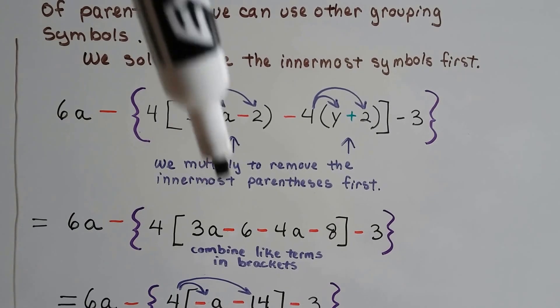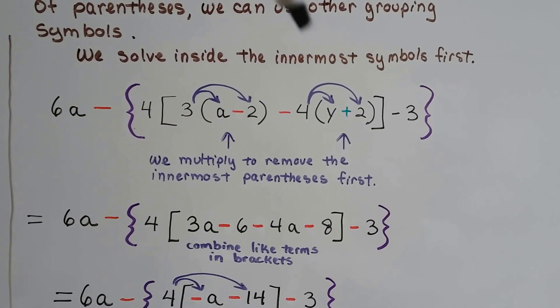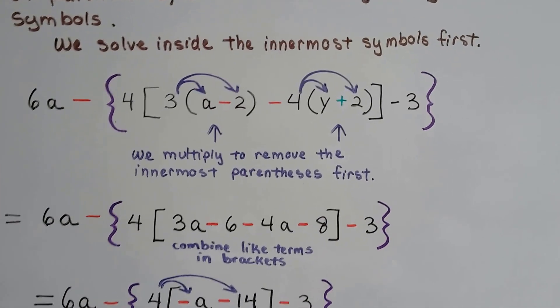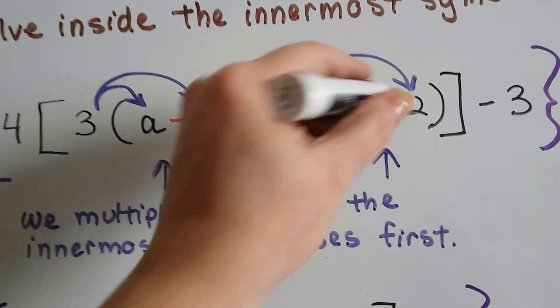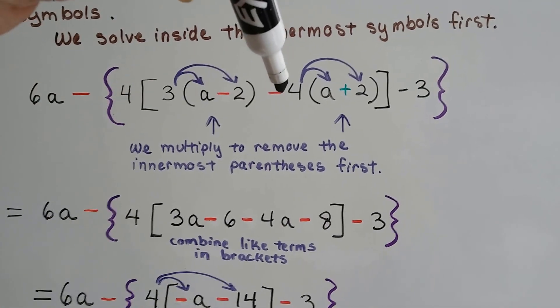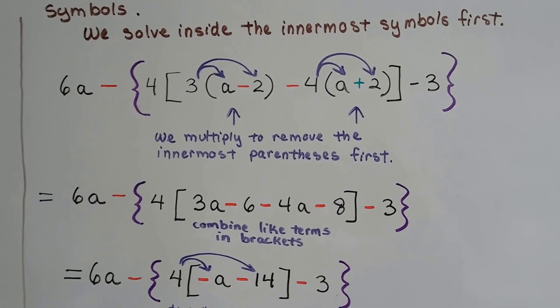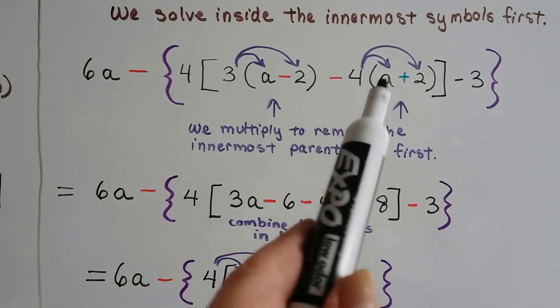So we get 3a minus 6, because 3 times a negative 2 is a negative 6. We distribute this 4 to the y and get minus, whoops, that's supposed to be an a. Sorry about that. We get a minus 4a, and minus 4 times a positive 2 is a minus 8.